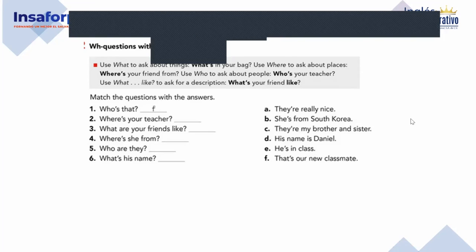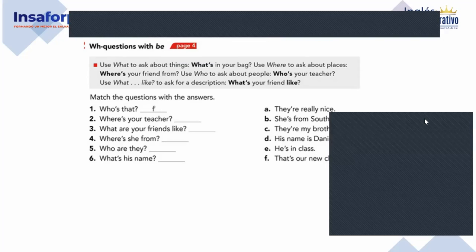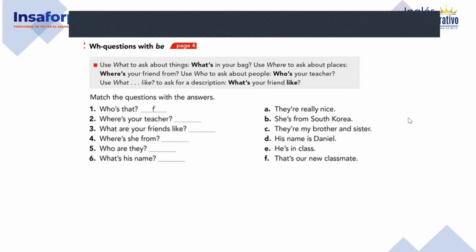Lorena, thank you. Number two — 'Where is your teacher?' The answer is E: 'He is in class.' Letter E — exactly, very good. Thank you so much, great job. Lucia, thank you. Number three — 'What are your friends like?' The answer is A: 'They're really nice.' That is correct, very good — we have letter A. Thank you so much for your participation.